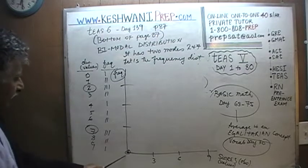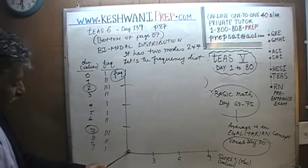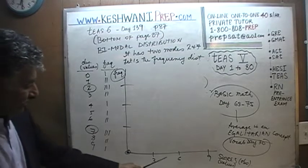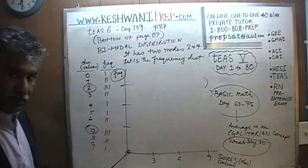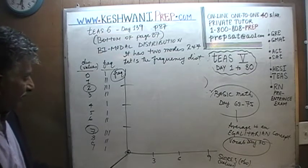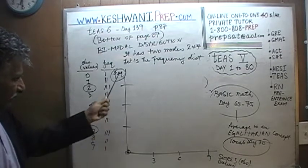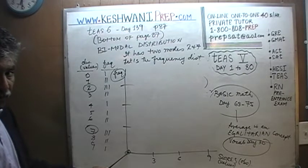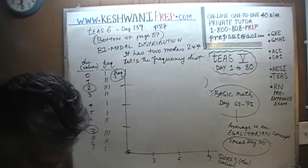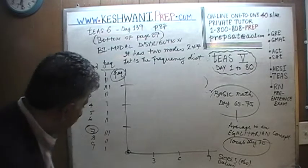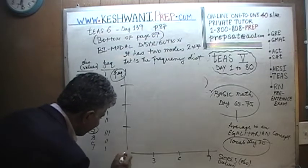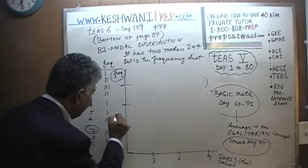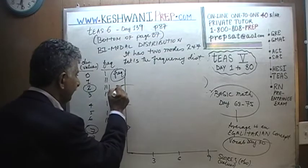That's not right. What does this point say? This is the value of 0 — and the way I plotted it, it says 0 people had a score of 0. That's wrong. One person had a score of 0. These are the frequencies: 1, 2, and 3.